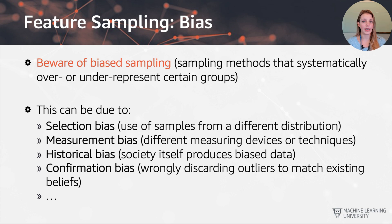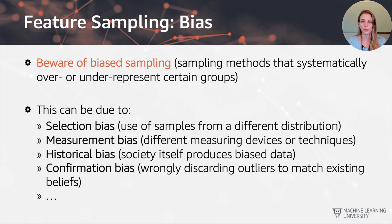The final example is confirmation bias, where you wrongly discard outliers to match existing beliefs. This can occur quite easily: you look at your data, you find a few data points that look very different to the rest, you think it's an outlier and remove it. But be careful — the outlier could actually be a minority group. Minorities by definition have fewer examples in the dataset, so if you discard data points that look different and where there are few examples, you might actually be wrongly discarding some minority groups.